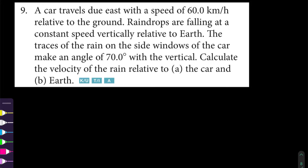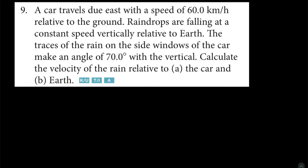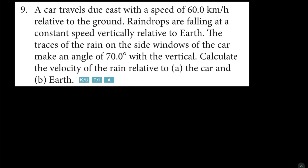A car travels due east with a speed of 60 km per hour relative to the ground. Raindrops are falling at a constant speed vertically relative to earth. The traces of the rain on the side windows of the car make an angle of 70 degrees with the vertical. Calculate the velocity of the rain relative to a, the car, and b, earth.